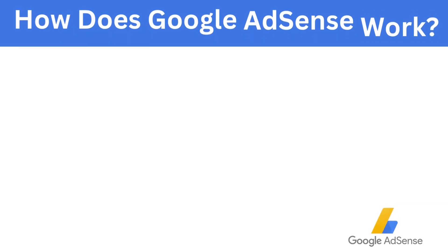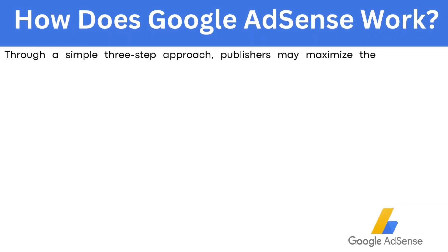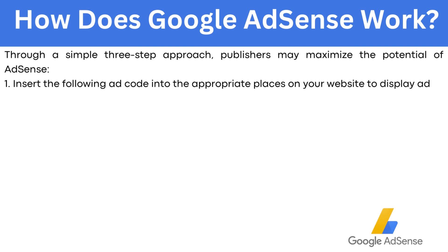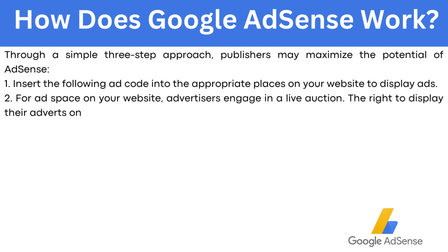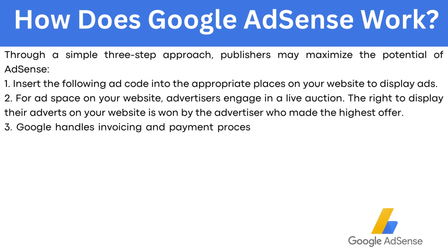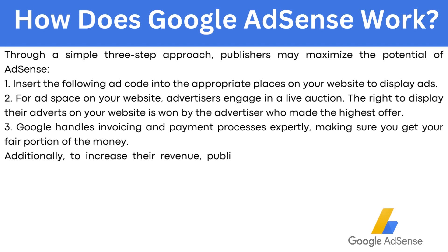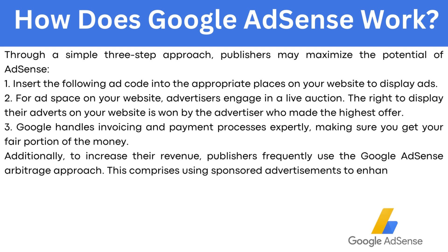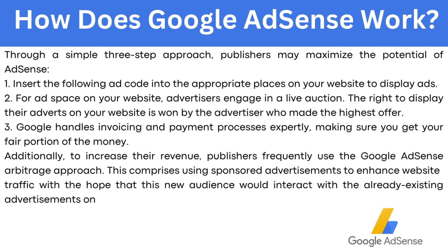How does Google AdSense work? Through a simple three-step approach, publishers may maximize the potential of AdSense. First, insert ad code into the appropriate places on your website to display ads. Second, advertisers engage in a live auction for ad space on your website — the advertiser who made the highest offer wins the right to display their ads. Third, Google handles invoicing and payment processes, making sure you get your fair portion of the money. Additionally, publishers frequently use the Google AdSense arbitrage approach, which involves using a sponsored advertisement to enhance website traffic with the hope that the new audience will interact with existing advertisements on the page, therefore earning income.